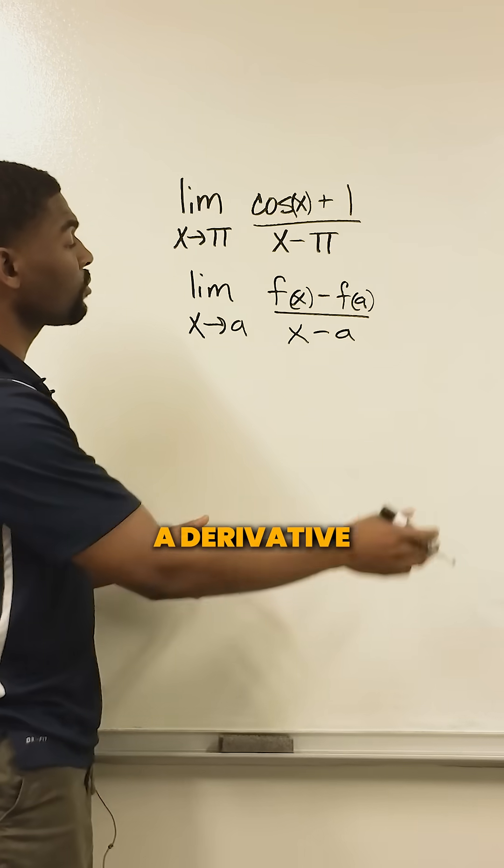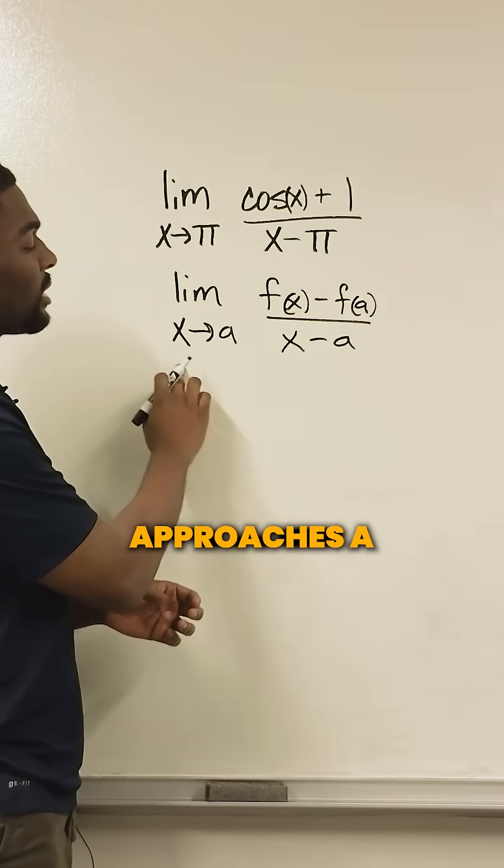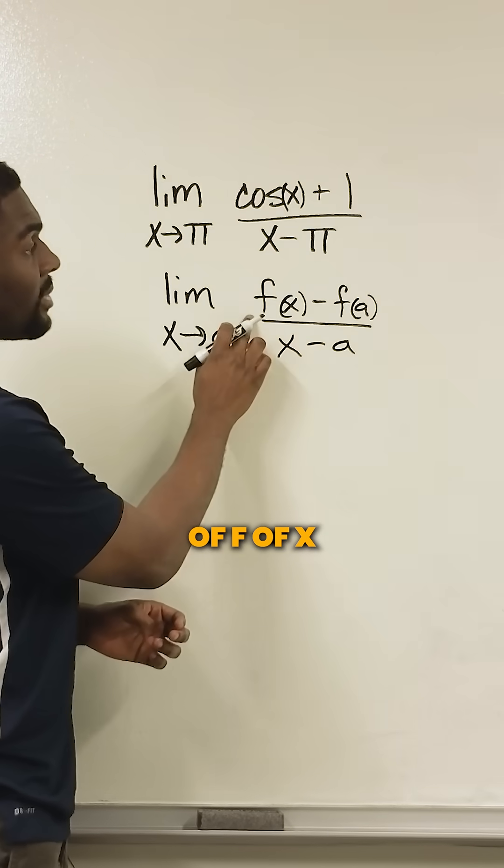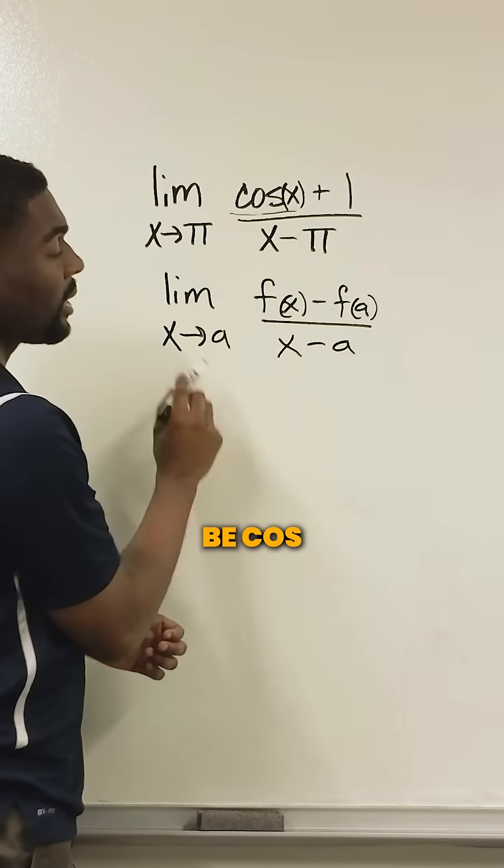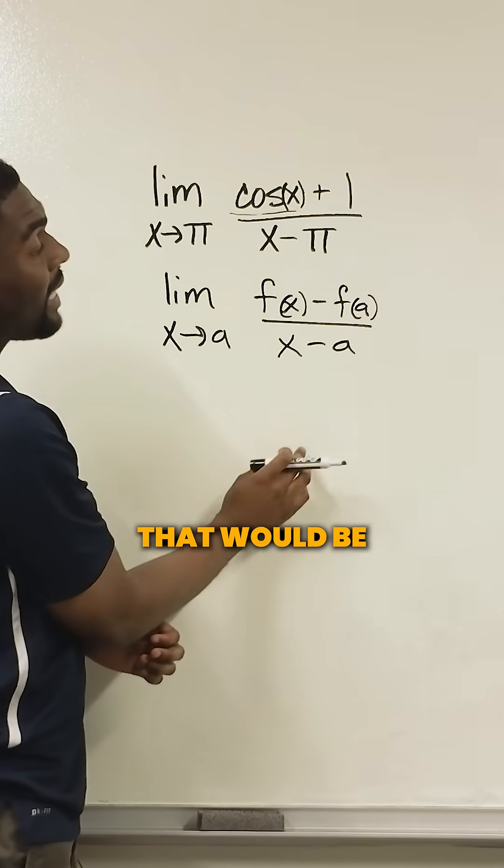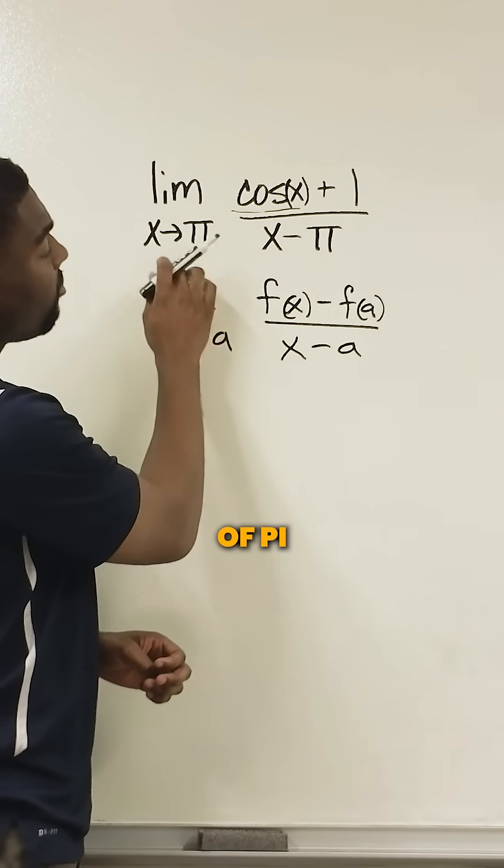Check this out. From our definitions of a derivative, we can see that the limit as x approaches a of f of x in this problem is going to be cosine minus f of a. That would be our cosine of pi.